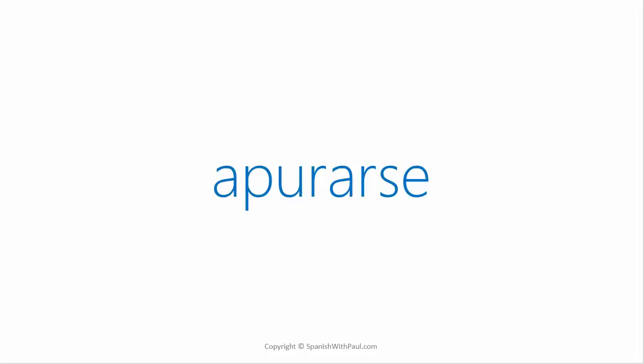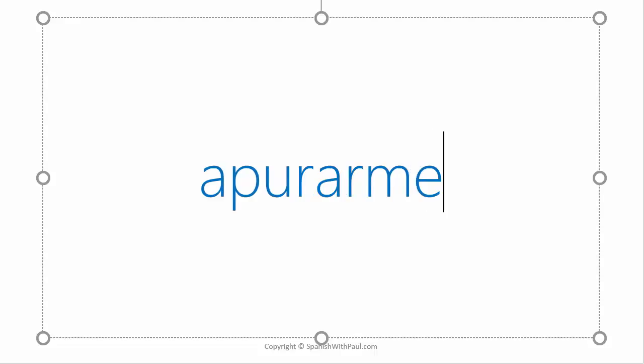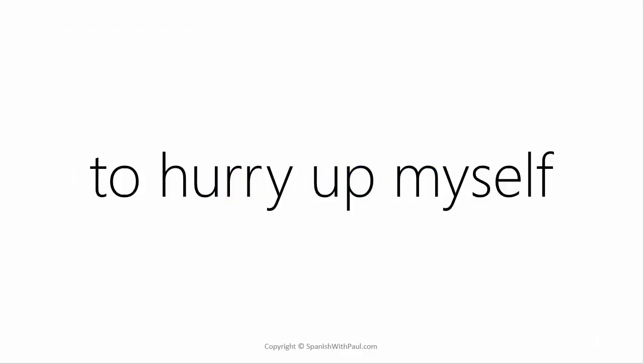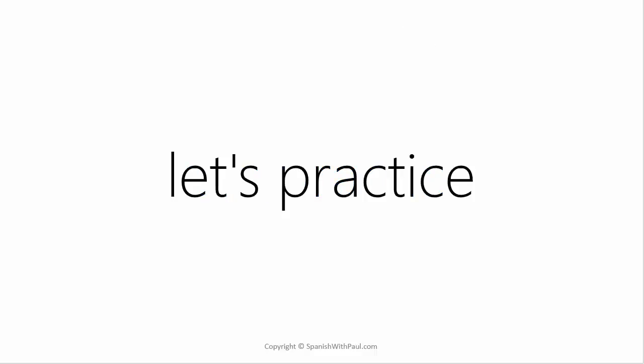If we take apurarse — 'to hurry up oneself' — and we change this end pronoun to 'me,' we get the sound of 'apurarme.' This means 'to hurry up myself.' Apurarme. Now let's practice using this.